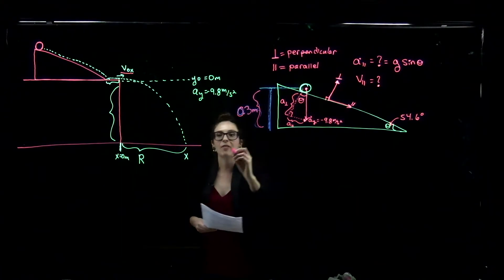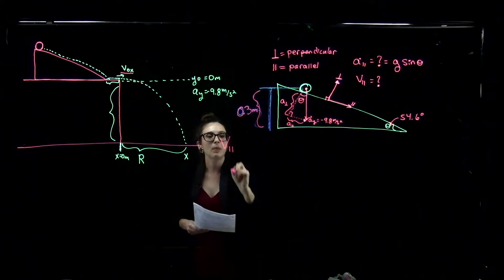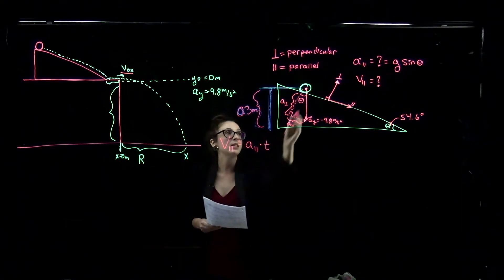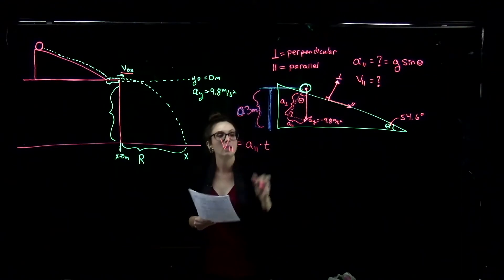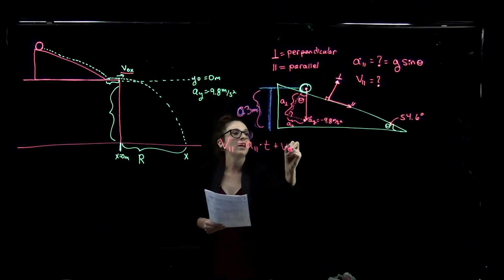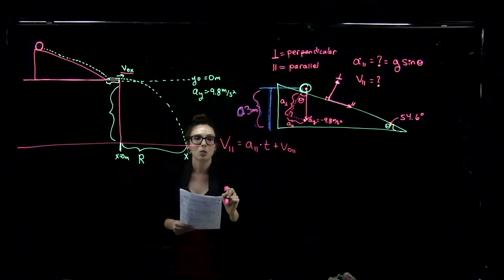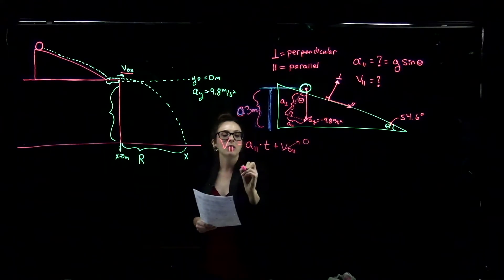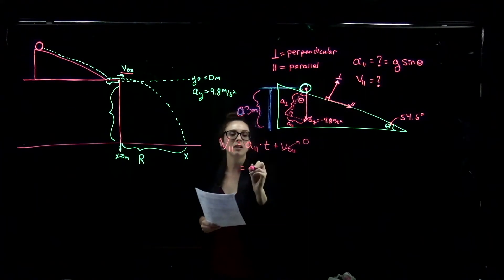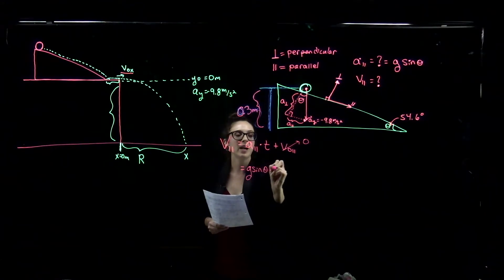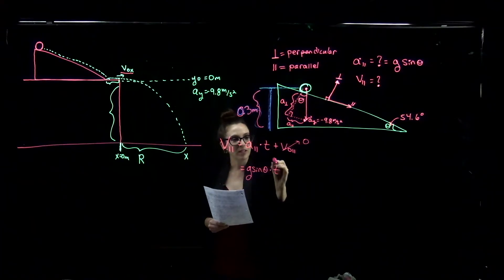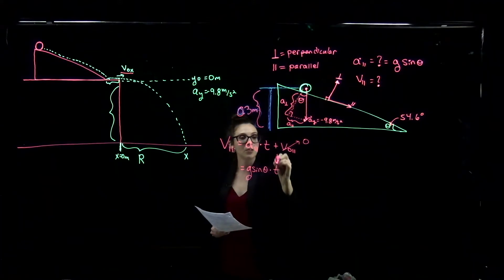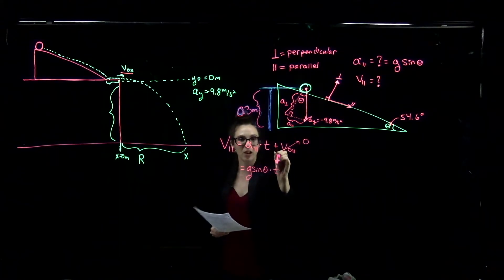The velocity of the ball parallel to the plane equals the acceleration parallel to the plane times the time it takes to roll down, plus the initial velocity parallel to the plane. Since the ball starts from rest, that initial velocity is zero, so this simplifies to G sine theta times time. But we don't yet know that time.